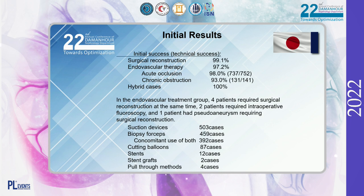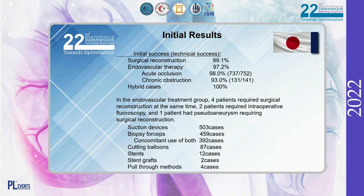We conducted an evaluation of initial results. Both methods yielded high initial success rates. In the endovascular treatment group, four patients required surgical reconstruction at the same time. Two patients required intraoperative thromboscopy, and one patient had pseudoaneurysm requiring surgical reconstruction. There were 503 cases using suction devices, 459 cases using biopsy forceps, and 392 cases using both devices. There were 87 cases requiring a cutting balloon, 12 cases requiring a stent, and 2 cases requiring stent grafts. All complex cases required a pull-through technique using an over-the-wire guide wire.